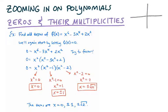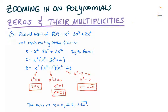To recap briefly, zeros are basically the same as x-intercepts. So if I graph a function, such as the one here, I would identify the zeros to be the 1, 2, 3 places where I cross the x-axis. So just with that graphical understanding, let's continue exploring this example.